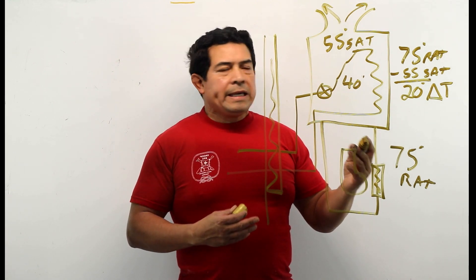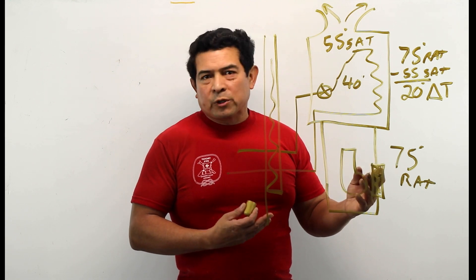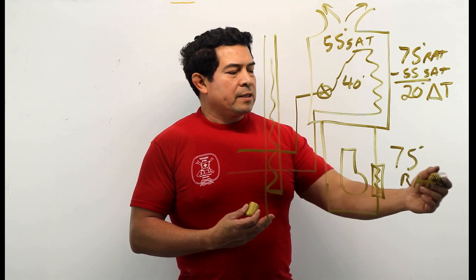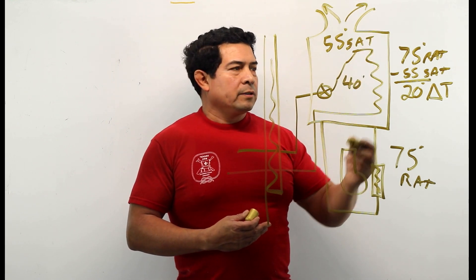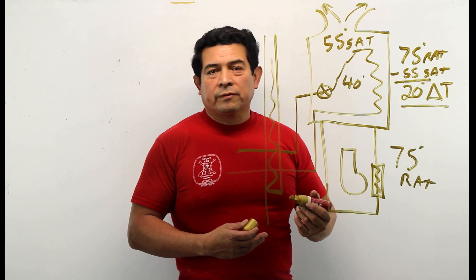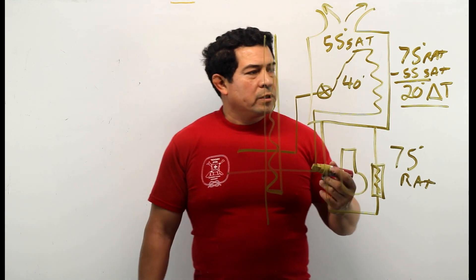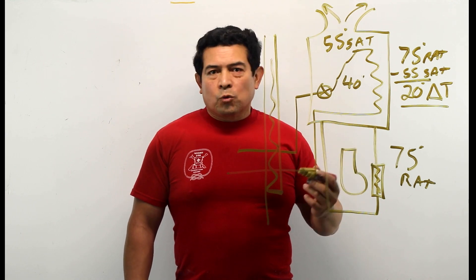When you say 20 degree delta T, delta T is just a fancy way of saying temperature difference. So we see that we have 75 coming in here, 55 going out. When we subtract we have 20 degree temperature difference, or in other words 20 degrees delta T if everything is working right.